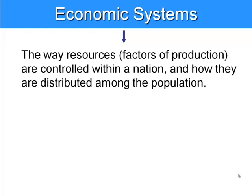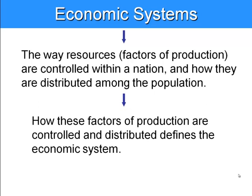An economic system is the way that a nation organizes, manages, and controls the factors of production so that wealth or materials that get produced within the nation are somehow distributed to members of that population. The method that gets used to manage these factors of production and determine who gets what is really what defines a different economic system.